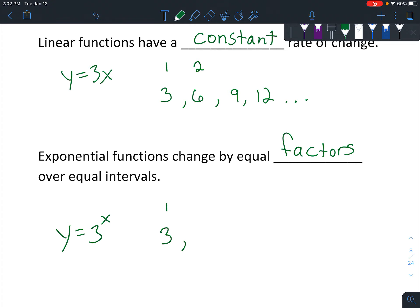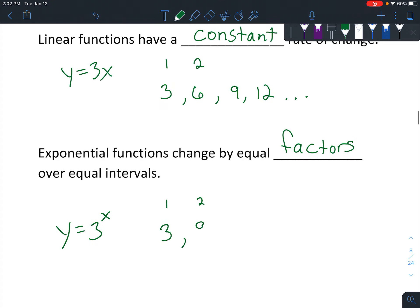But then 3 squared would be 9 already. And then 3 to the 3rd would be 27, and then 3 to the 4th would be 81. You can see that's going to get large a lot faster. And each time you're multiplying by 3, and that's because that's our base right there.